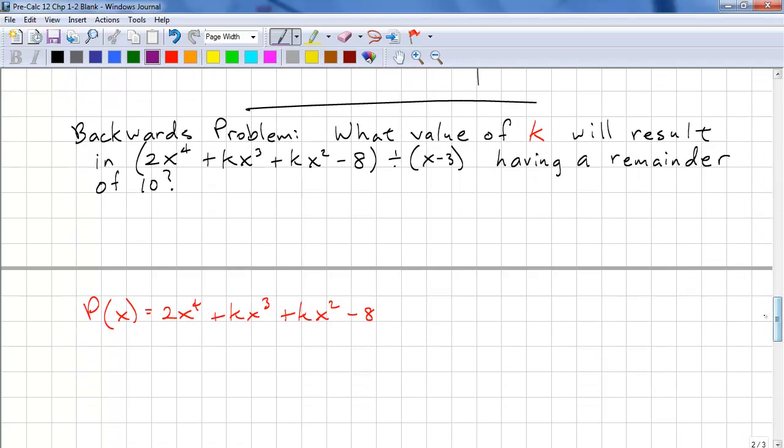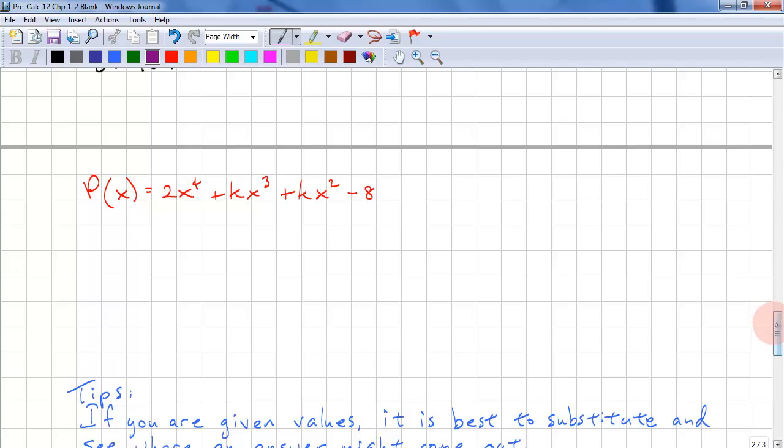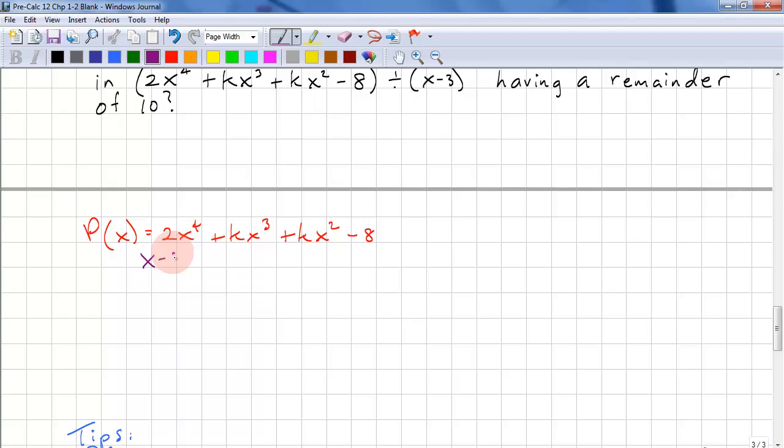Let's look at another problem, a backwards problem. What value of k will result in 2x to the power of 4 plus kx cubed plus kx squared minus 8 divided by x minus 3, having a remainder of 10? So P(x) is our dividend. And our divisor is x minus 3. This means a equals 3. So P(a) equals P(3) equals 2 times 3 to the power of 4 plus k times 3 cubed plus k times 3 squared minus 8 equals 10.